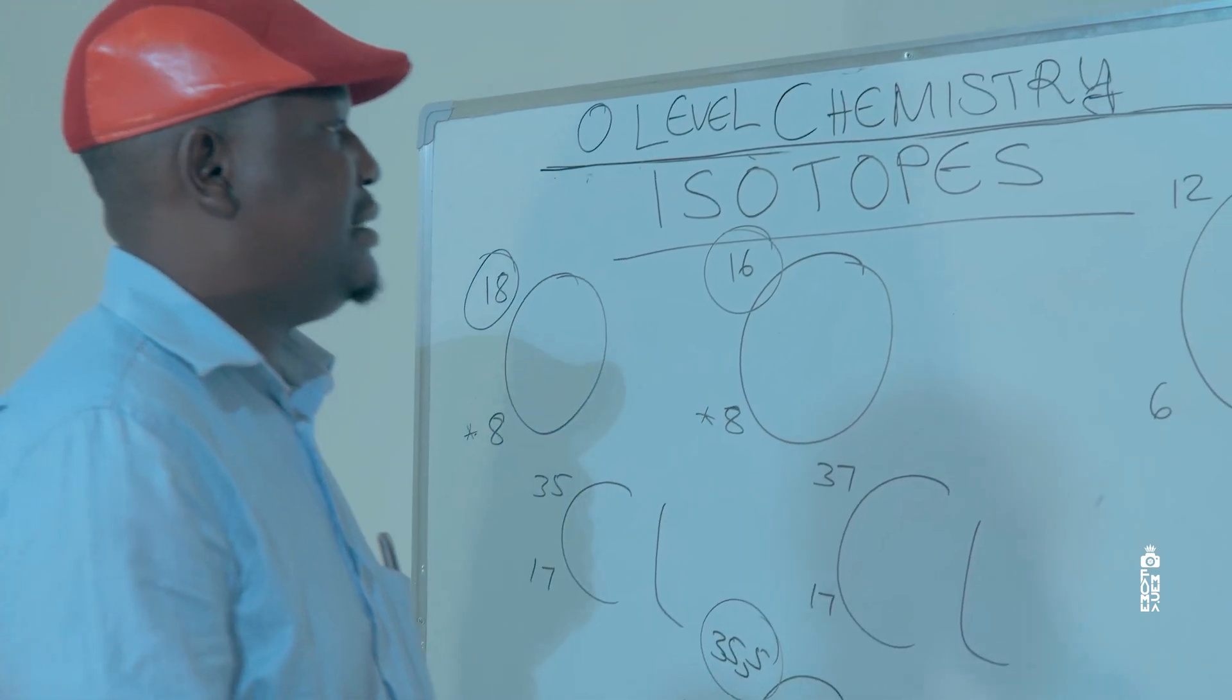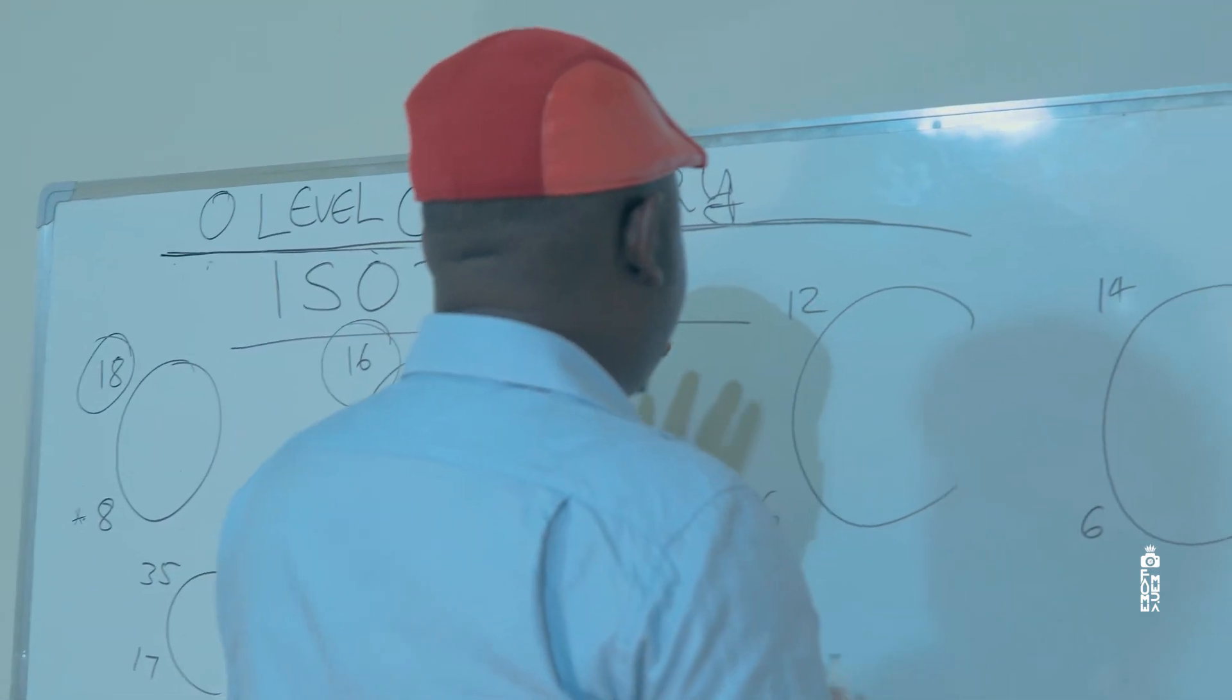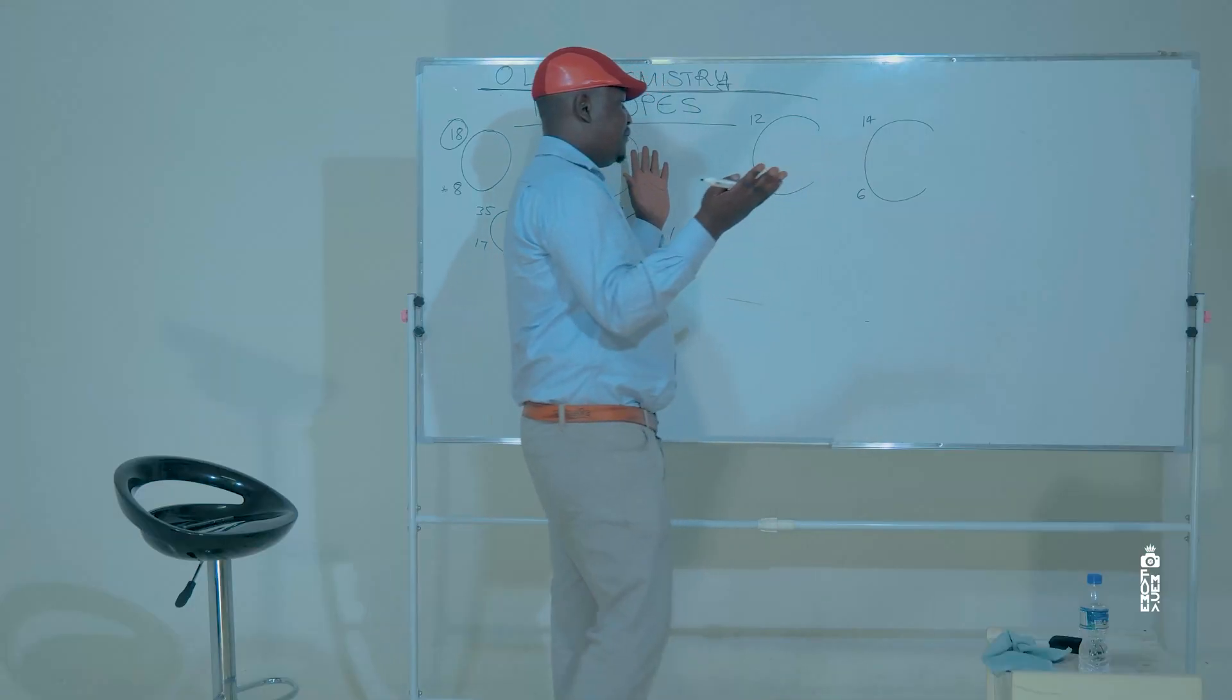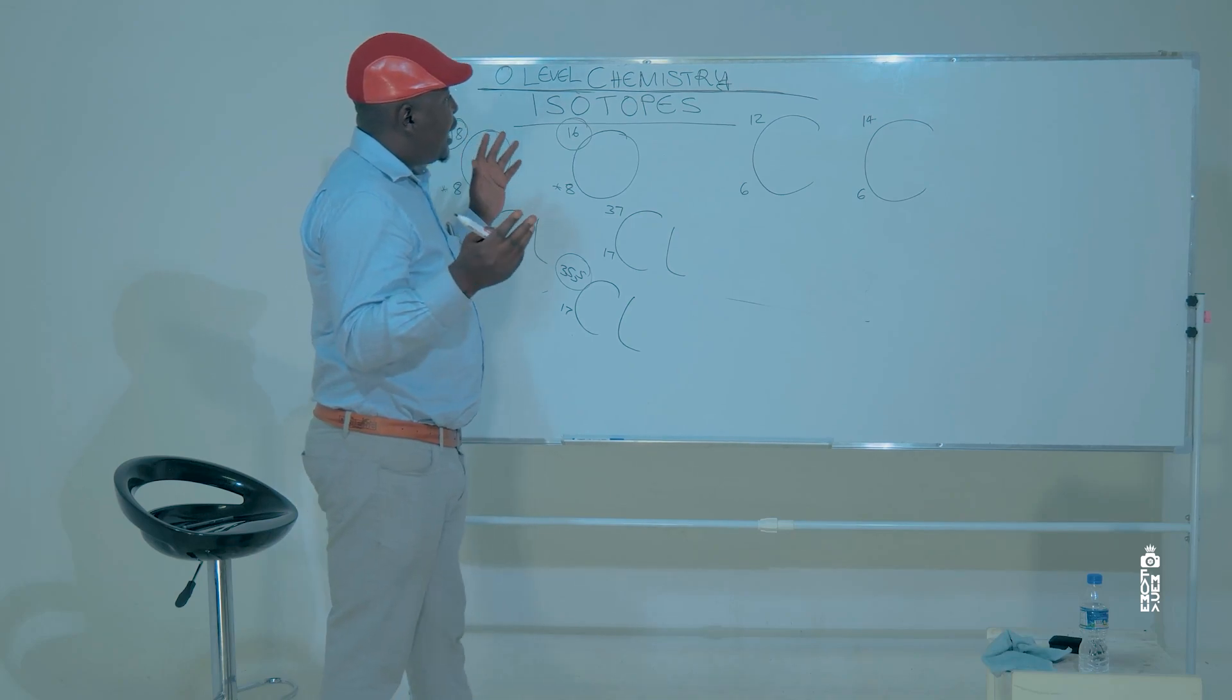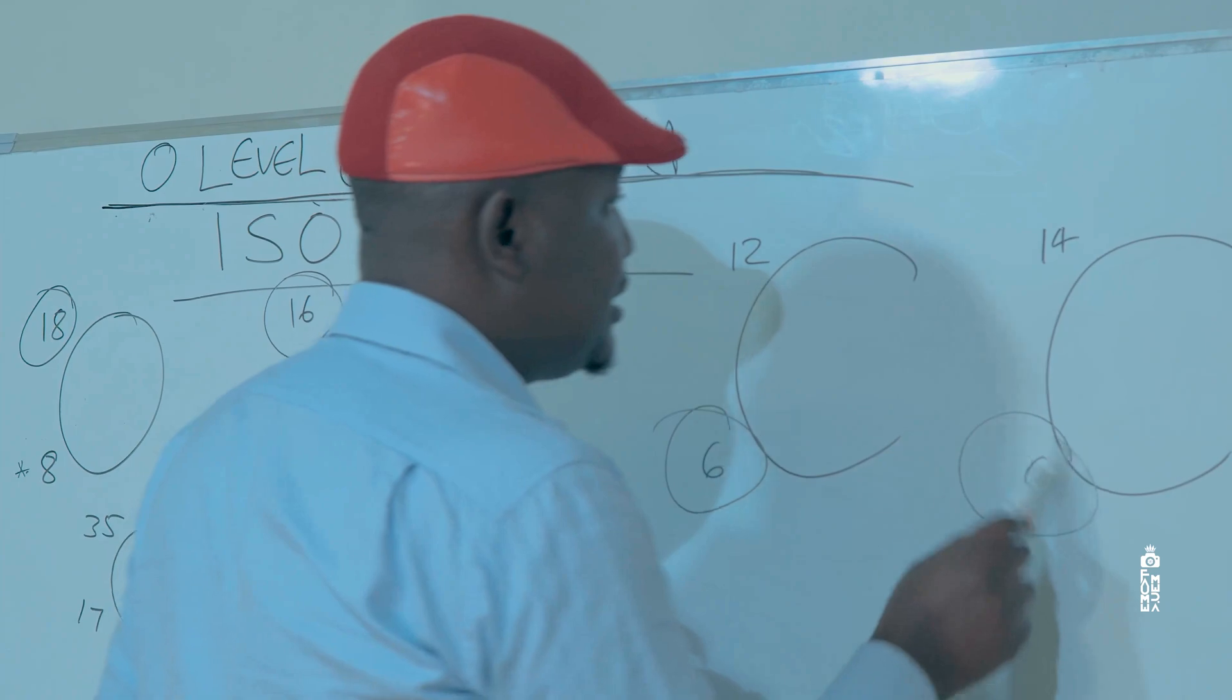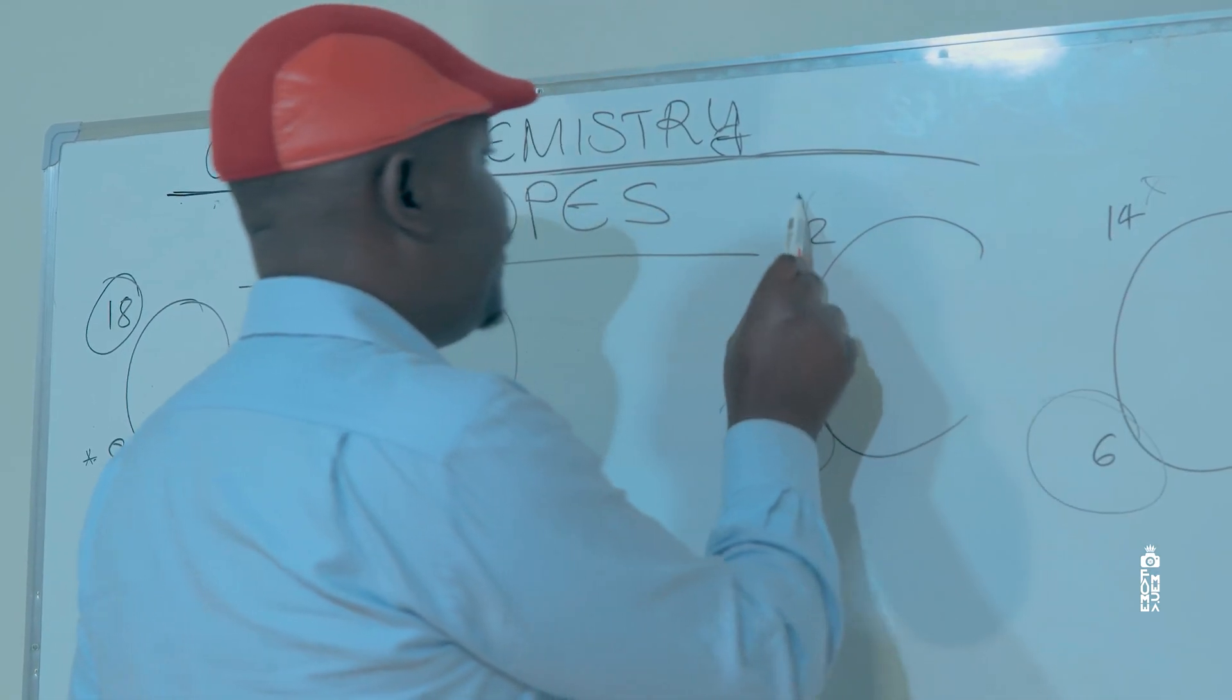Last but not least, carbon 12,6, carbon 14,6. These are two different isotopes. They've got the same number of protons, but different number of neutrons, as you can see on the board.